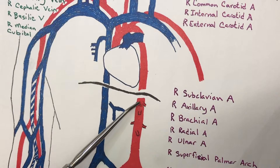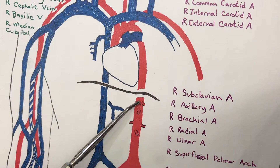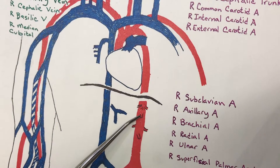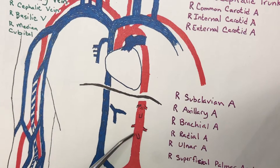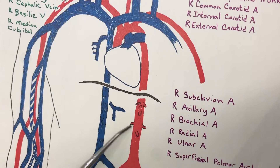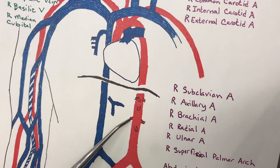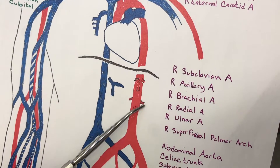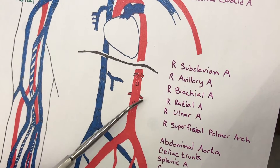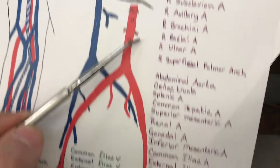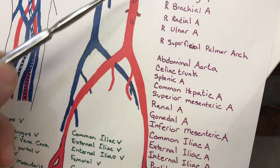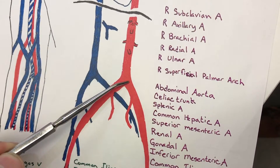This is the celiac trunk. This is the superior mesenteric artery. This is the inferior mesenteric artery, and these two are your gonadal arteries — your right and left gonadal. Right and left testicular arteries, or right and left ovarian arteries. This is your abdominal aorta.